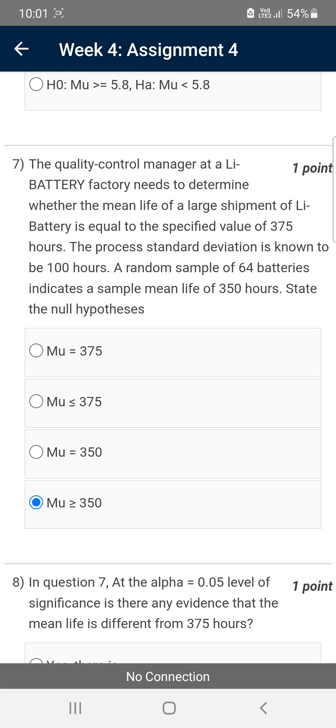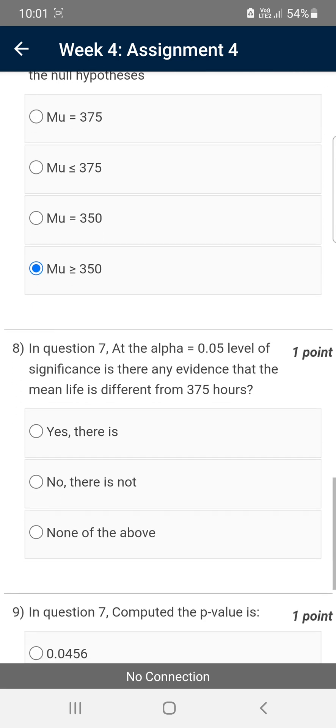Moving on to the eighth question. This is again based on the seventh question itself. In question seven, at the alpha equals 0.05 level of significance, is there any evidence that the mean life is different from 375 hours? For the eighth question, the probable solution is the first option: yes, there is.